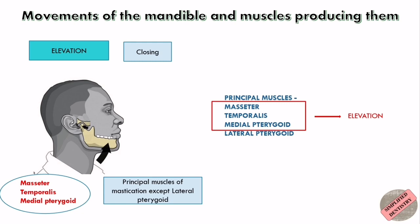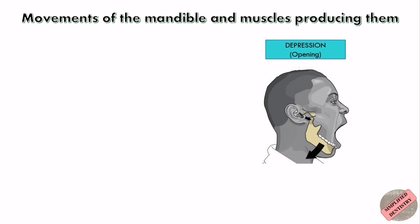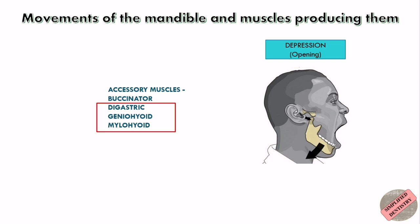Lateral pterygoid helps in depression. You just have to remember that among all four principal muscles, three — masseter, temporalis, and medial pterygoid — are used in elevation, and only lateral pterygoid helps in depression. Along with lateral pterygoid, the accessory muscles digastric, geniohyoid, and mylohyoid are also involved in depression — all accessory muscles except buccinator.